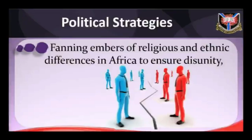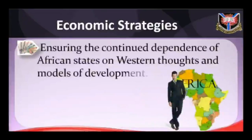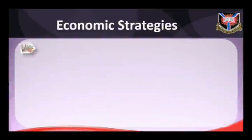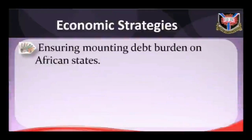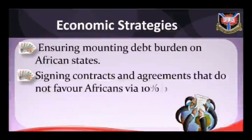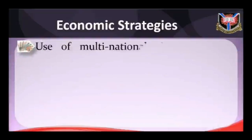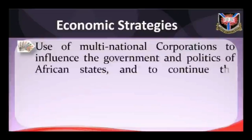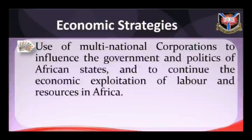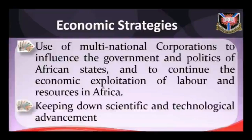Economic strategies employed by colonial masters include: A — ensuring the continued dependence of African states on Western models of development through external loans, grants, food aid, military aid, machinery and so-called experts. B — ensuring mounting debt burdens on African states. C — signing contracts and agreements that do not favor Africans, via 10% bribes to local agents in government. D — use of multinational corporations to influence the government and politics of African states and to continue the economic exploitation of labor and resources. E — keeping down scientific and technological advancement.